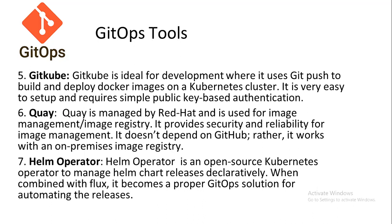Gitkube is a tool for development that uses git push to build and deploy Docker images on a Kubernetes cluster. It is easy to set up and requires simple public-key-based authentication. Quay, managed by Red Hat, is used for image management and image registry, providing security and reliability for image management without depending on GitHub — it works with an on-premises image registry.